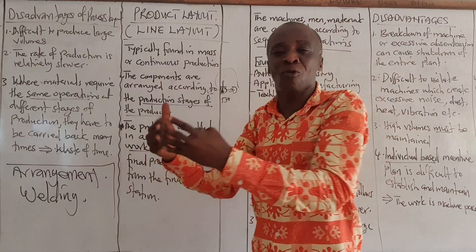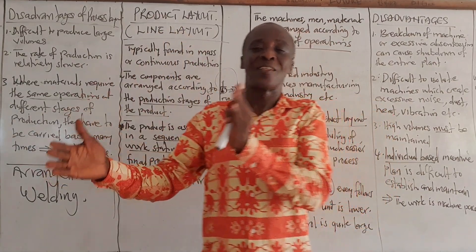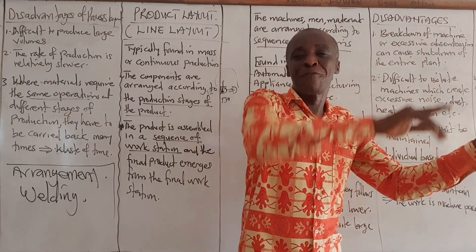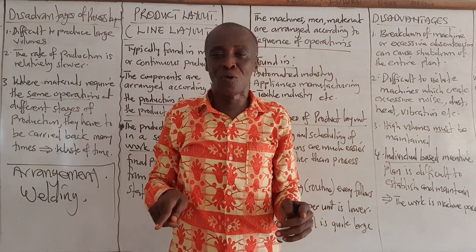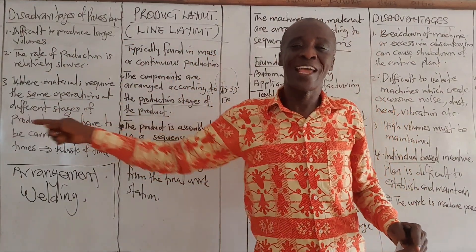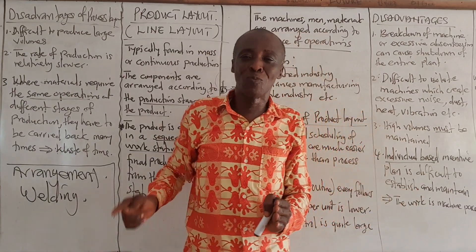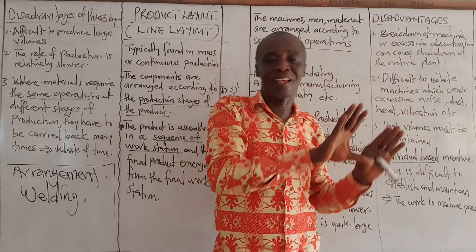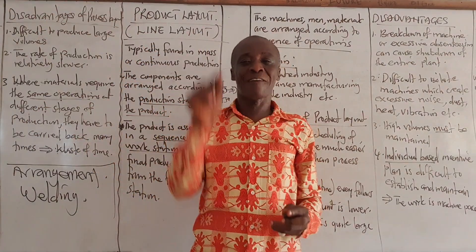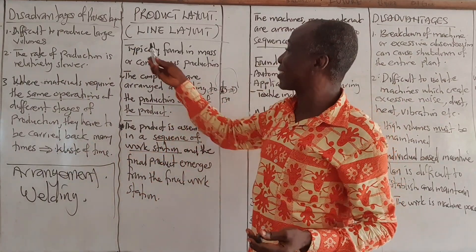One machine — a specialized machine — has different workstations arranged according to the sequence of operations. After one operation is done, the product moves to the next workstation automatically. It will not move backwards or return to a previous station. It flows from one workstation to another until the final product emerges.